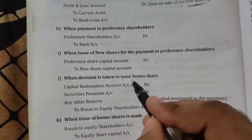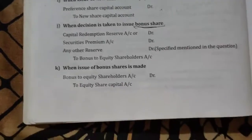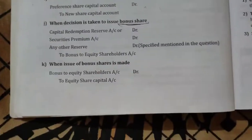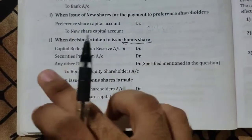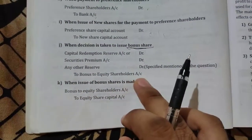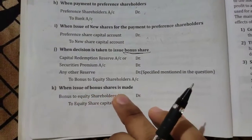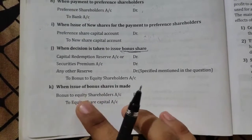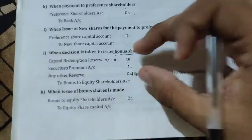When the decision is taken to issue bonus shares, these three or four entries will come occasionally — not in every question, only in a few. For the safer side, we can learn them. The entry is: Capital Redemption Reserve Account Dr., Securities Premium Account Dr., any other reserve specified in the question Dr., to Bonus to Equity Shareholders Account. When the issue of bonus shares is made: Bonus to Equity Shareholders Account Dr. to Equity Share Capital Account.